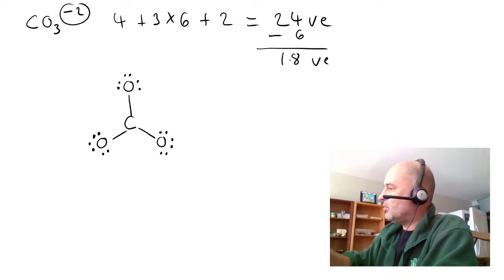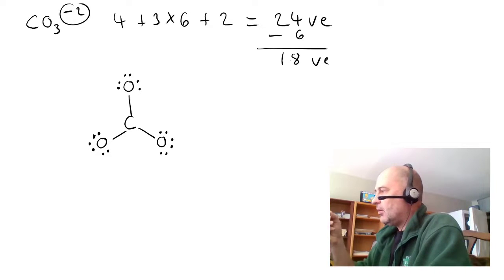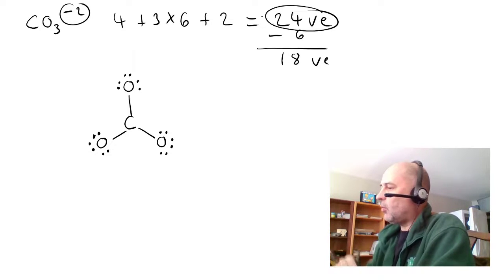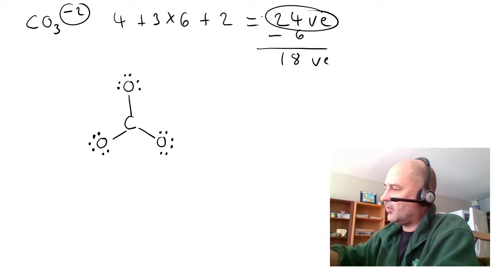So we just used up all 24. And you check for octet. As I said, oxygen, each oxygen has an octet, but the carbon doesn't.